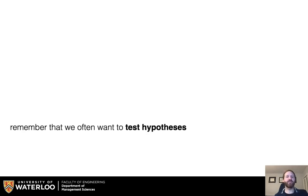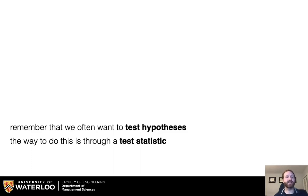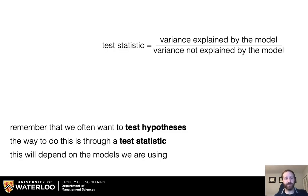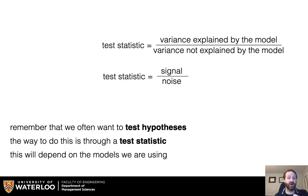We often want to test hypotheses. The way to do this is through a test statistic, which will depend on the models we are using. The test statistic is the variance explained by the model over the variance not explained by the model — in other words, it's the ratio of signal to noise. So if you have a strong signal or you reduce the noise, you have some sense of a conclusion that you can make.